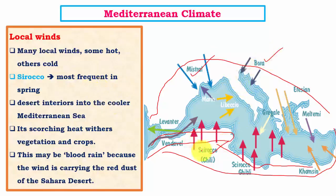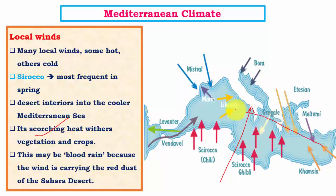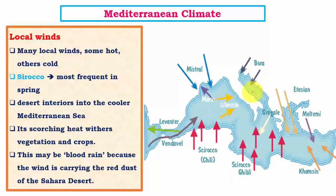Sirocco is a warm wind that flows from Africa toward the Mediterranean Sea and the southern parts of Europe. It is a very hot, scorching wind that withers vegetation and crops, completely removing moisture content from vegetation. During extreme summers, because of this wind, southern European regions are very warm and dry with vegetation totally devoid of moisture. It also brings dry dust from the Sahara region, and because of its reddish colour it is called 'Blood Rain.'